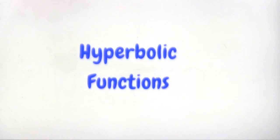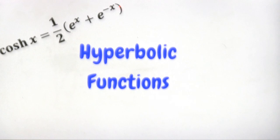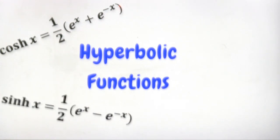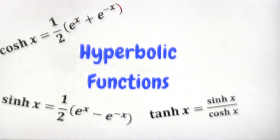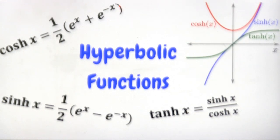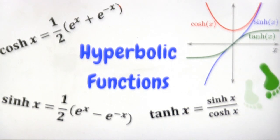For hyperbolic functions, cosh x equals one-half multiplied by (e^x + e^(−x)), and sinh x equals one-half multiplied by (e^x − e^(−x)). Another one is tanh x, which equals sinh x over cosh x. The graphs representing these hyperbolic functions are illustrated in the top right corner.